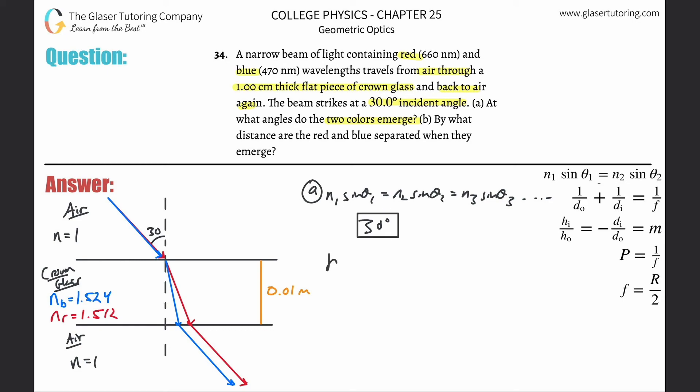Letter B is asking by what distance are the red and blue separated when they emerge. This might depend on how you perceive separation, but I'm going to calculate this distance. This little difference in distance, if you can see that there's a little purple line I just drew between the red and the blue, that's what I'm going to find. I want to find my delta x.